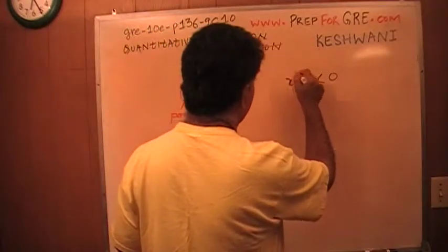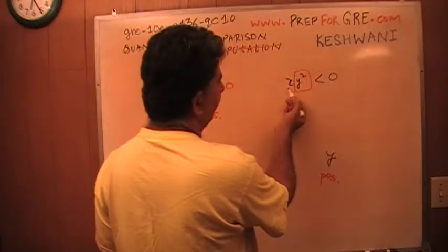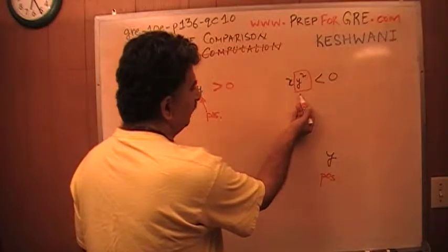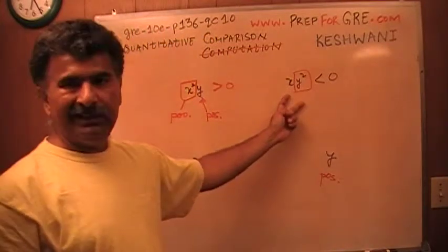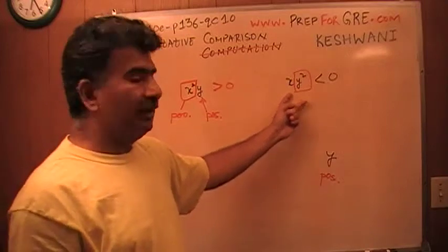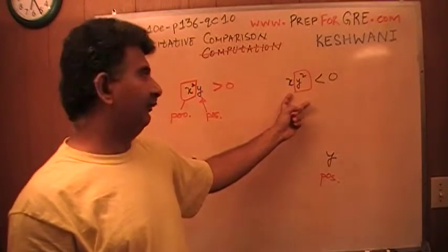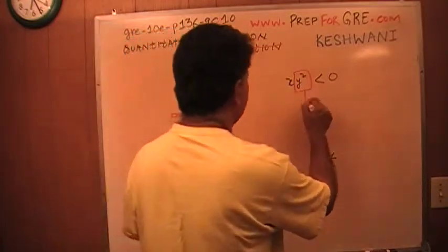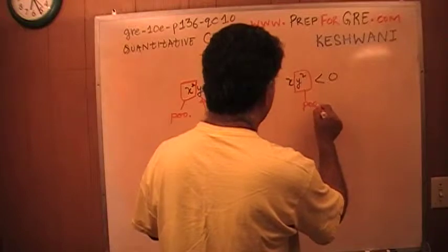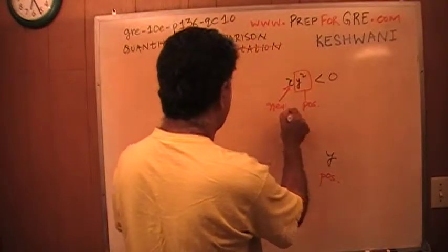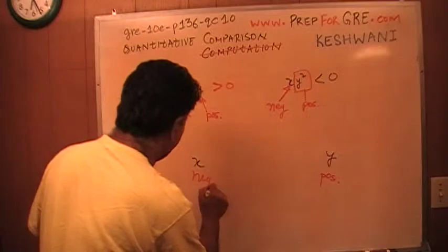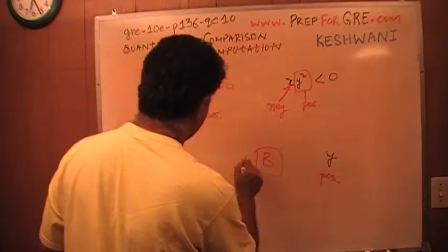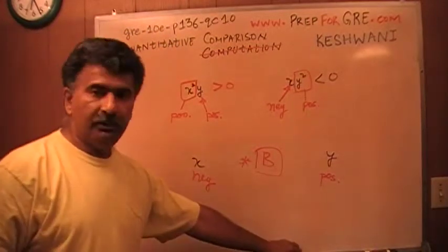So that means y squared is a positive quantity. And then I'm told that x times y squared is less than 0. The only way the product of two quantities can be negative is when one of those two quantities is negative — because if they were both negative, it would become positive again. So because y squared is positive, that implies that x would have to be negative.